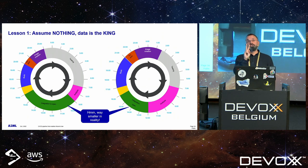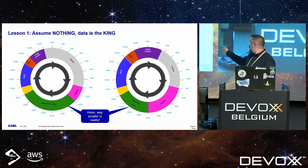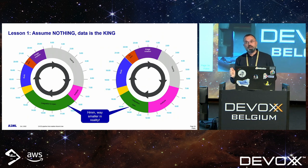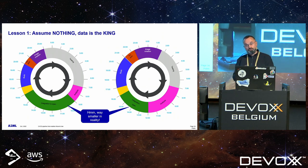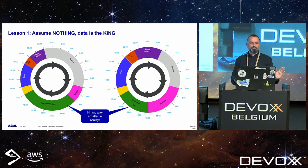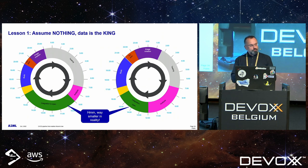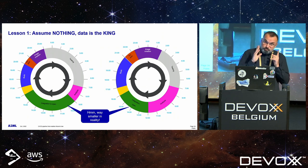So we started two actions in parallel. First, optimize everything you can in the integration window — not a second is lost. Second, see how to reduce the other big bulks. And lesson one: assume nothing. All the presentations showing how it works — throw them away and look at what the logs show, because logs do not lie. Always look at raw data.